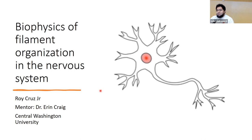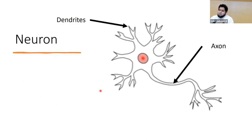To start off, the ability of eukaryotic cells to resist deformation against environmental factors, to traffic organelles, and to change shape during movement depends on the cytoskeleton. The cytoskeleton is made out of three specific filaments: actin filaments, intermediate filaments, and microtubules. This presentation will focus on microtubules and their importance in neurons.